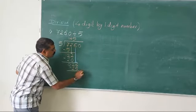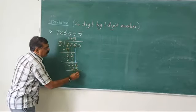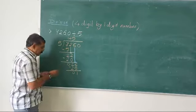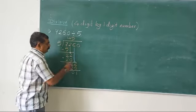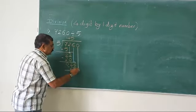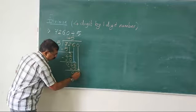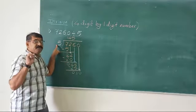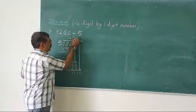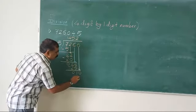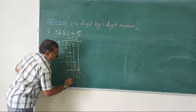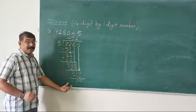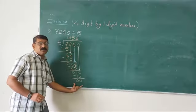Let us do the subtraction: 6 minus 5 is 1, and 2 minus 2 is 0. Take down the next digit, which is 0, so it becomes 10. We know in the table of 5 that 10 comes — 5 twos are 10. So here will be 2, and here will come 10. We do the subtraction and get remainder 0. This last part is called the remainder.